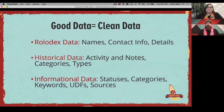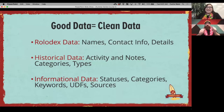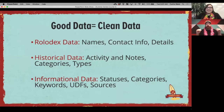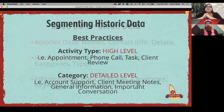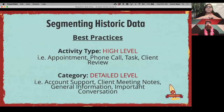The rolodex data is essentially what it sounds like — just a basic form of a CRM where you can find someone's name and contact information. But taking the other two types of data gives you the ability to really put power into it. The historical data is what we're focusing on with activities and notes, and then talking about categories and setting up types for those.